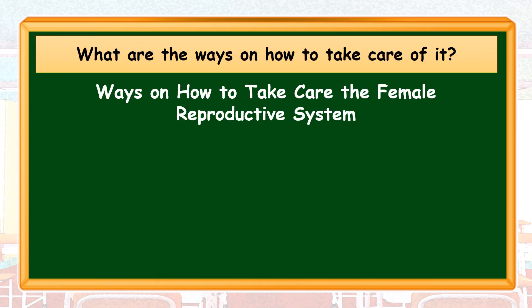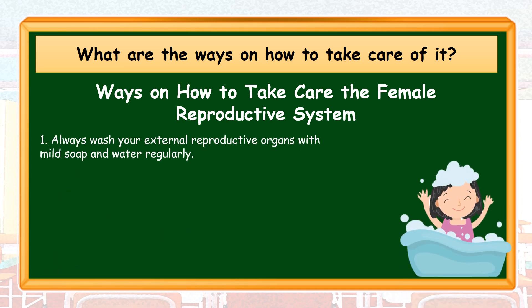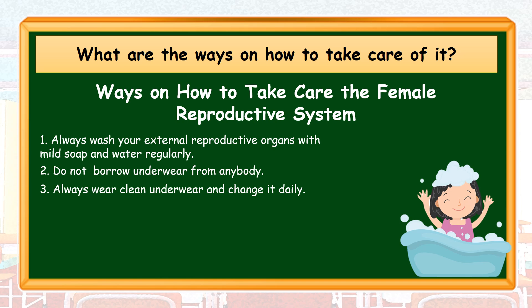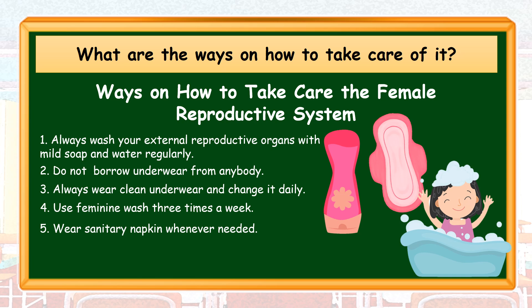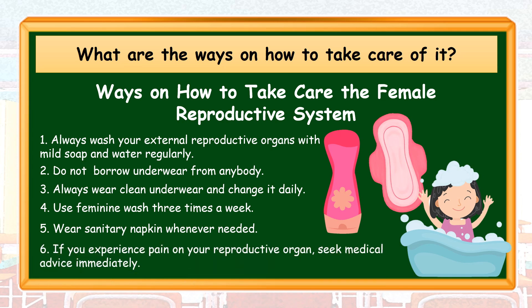Ways on how to take care of the female reproductive system: 1. Always wash your external reproductive organs with mild soap and water regularly. 2. Do not borrow underwear from anybody. 3. Always wear clean underwear and change it daily. 4. Use feminine wash 3 times a week. 5. Wear a sanitary napkin whenever needed. 6. If you experience pain on your reproductive organ, seek medical advice immediately.